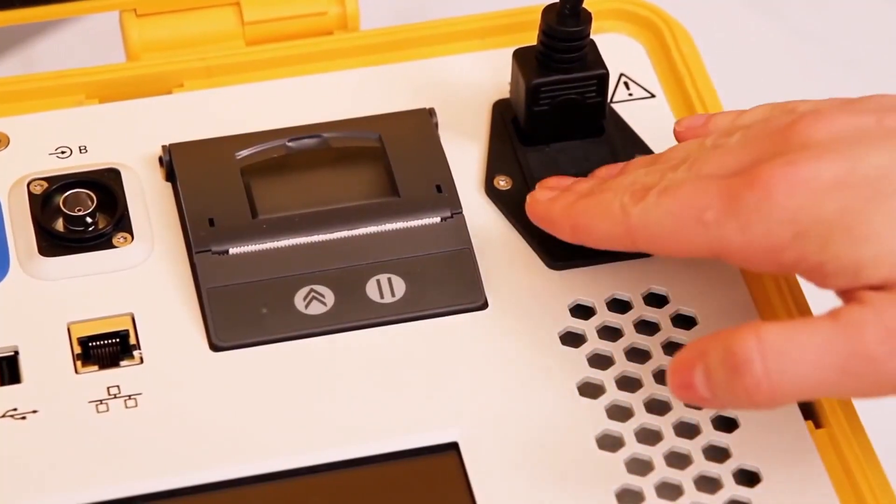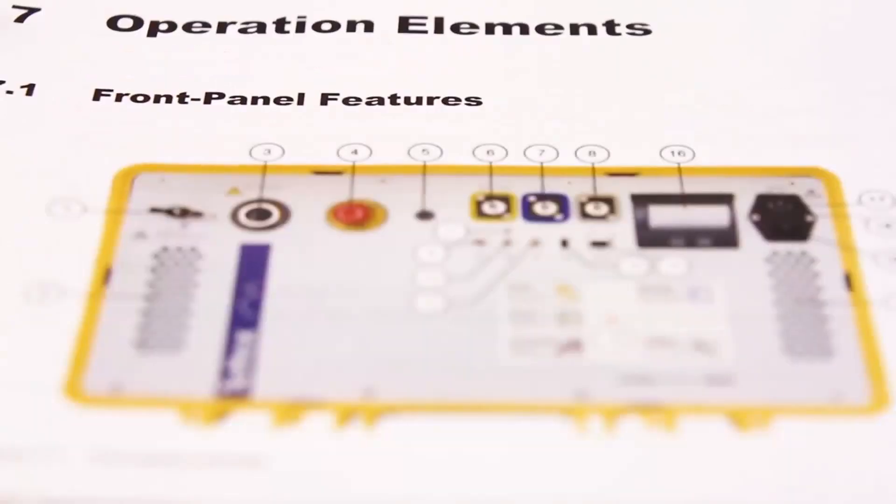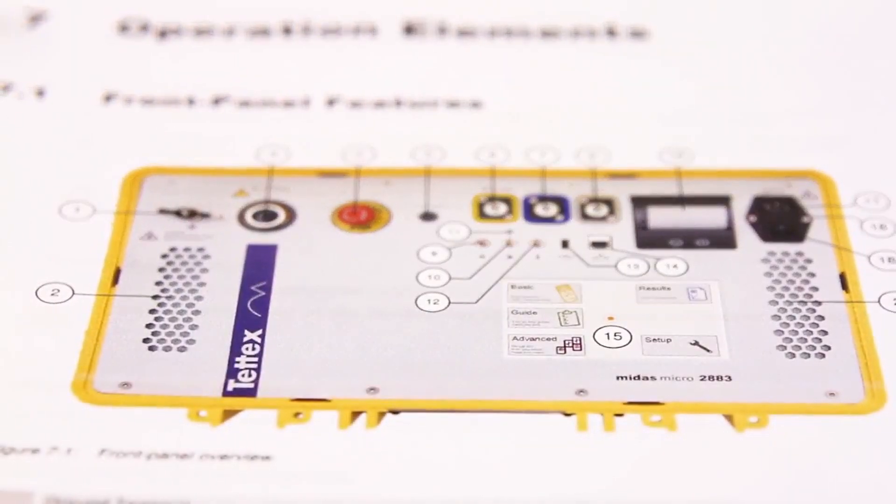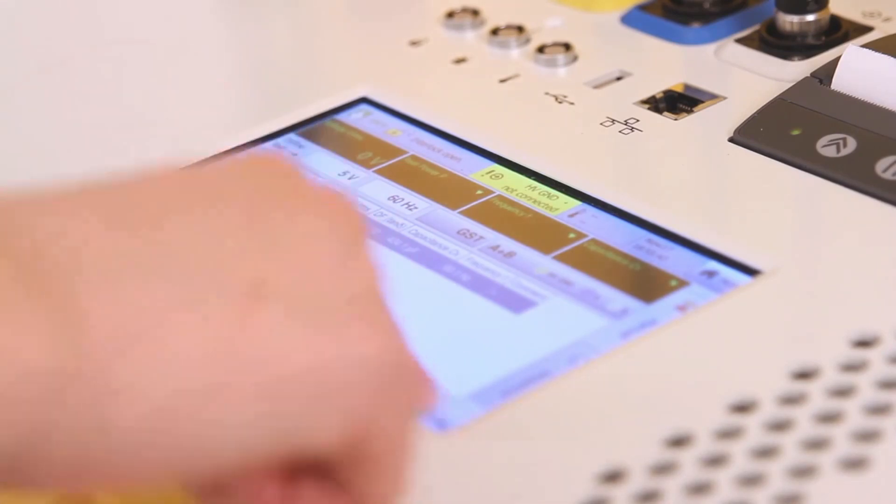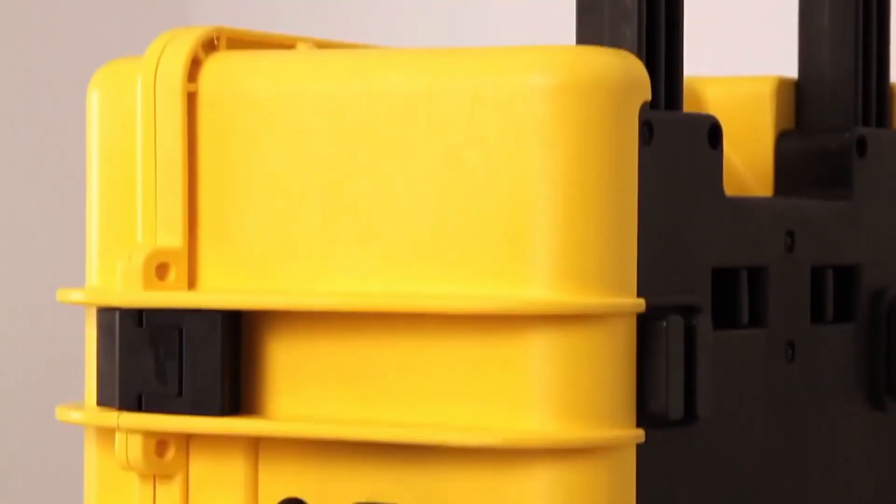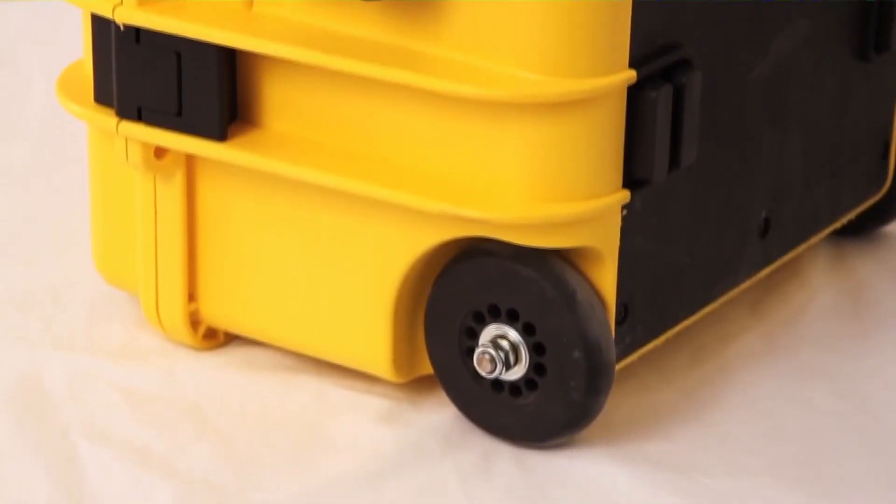The MIDAS MICRO is an all-in-one power factor tester that includes a 12 kilovolt power supply, standard capacitor, and guided interface that makes tests quick and easy to perform. It comes in a lightweight and rugged single-piece case with wheels for easy transport.